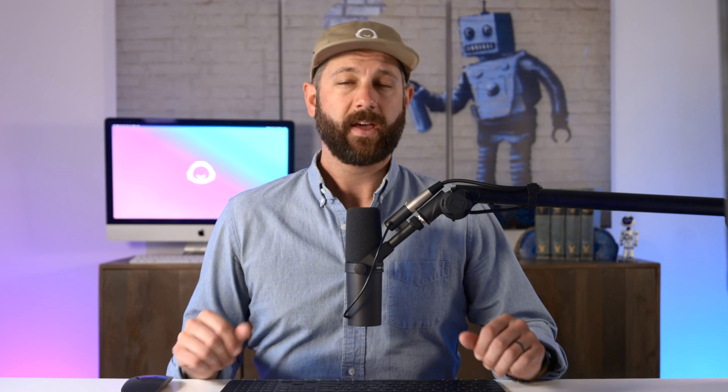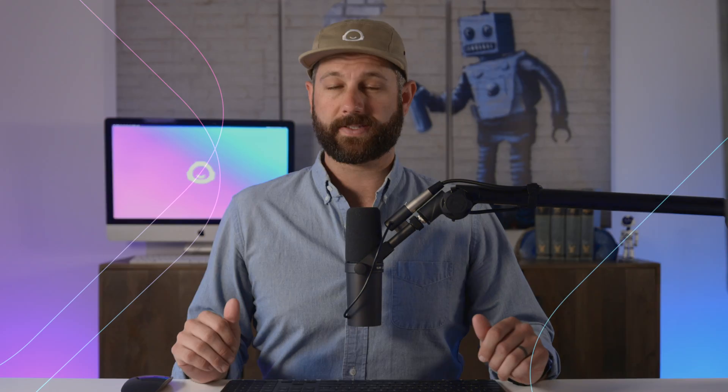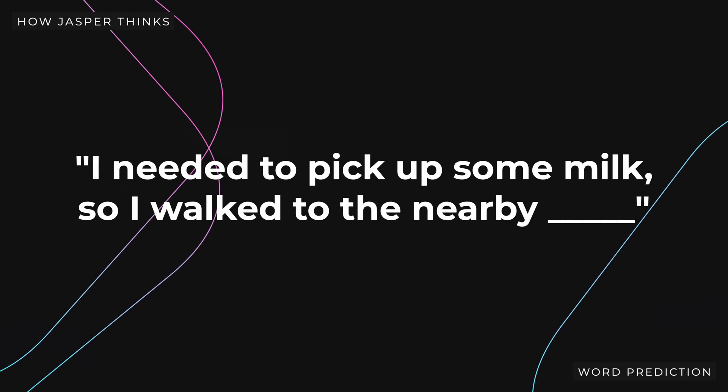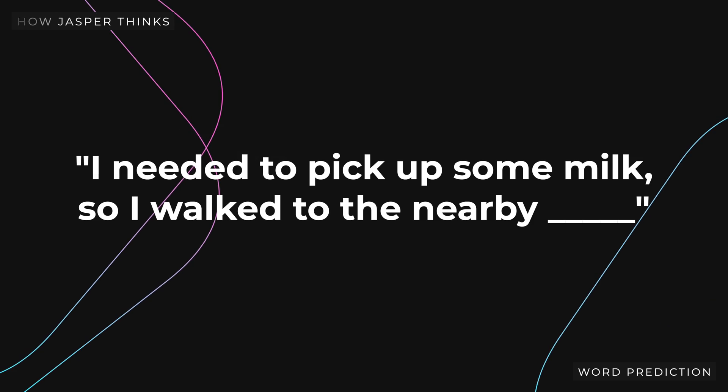Let me show you what I mean. For example, if you ask Jasper to complete the following sentence — 'I needed to pick up some milk, so I walked to the nearby blank' — inside Jasper's brain, he will make a list of which words are most likely to come next and assign a percent chance to each word of coming next.